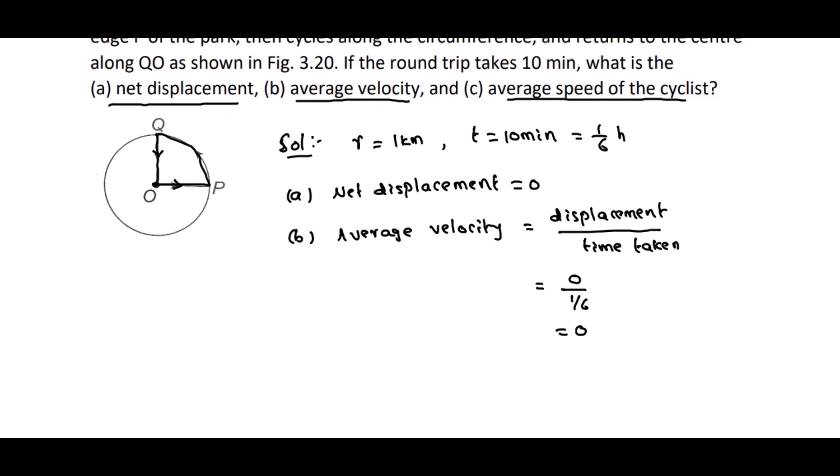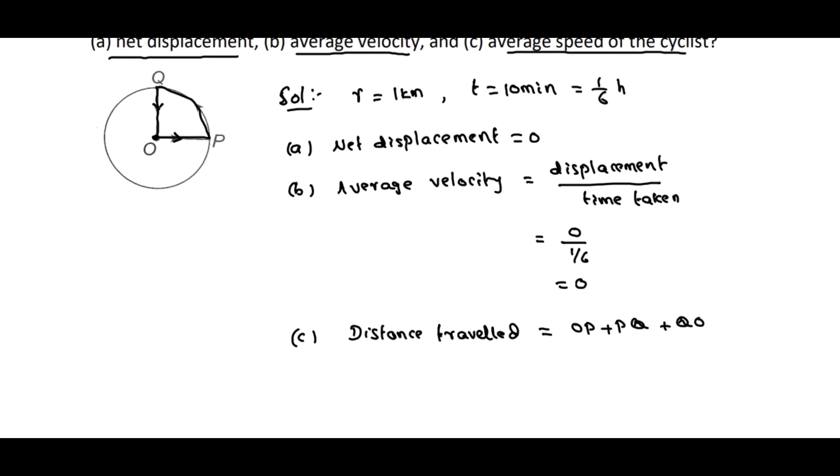Coming to C, average speed. To get the average speed, first of all we need to calculate the distance traveled. So the distance traveled by the cyclist is equal to OP plus PQ plus QO. OP is nothing but radius. PQ is nothing but 1/4 of the circumference, so 1/4 of circumference of the circle, plus QO is again radius.